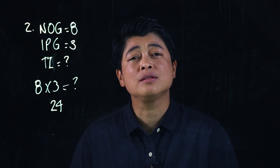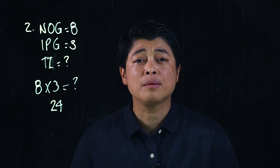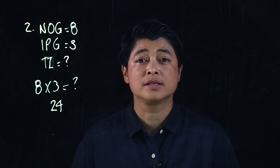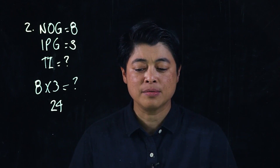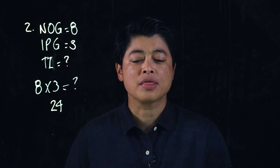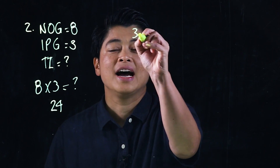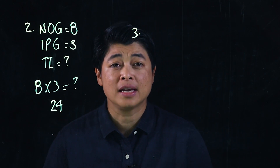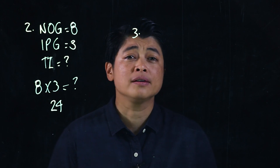Since the lesson is about tables of threes, we count by threes until we hit eight fingers, which gives us twenty-four. Parents, we need to encourage our kids to be able to count with their fingers.